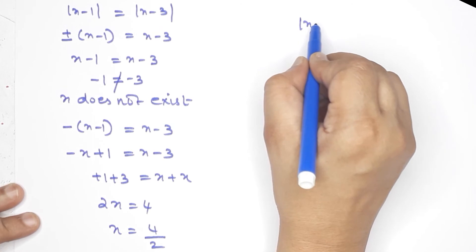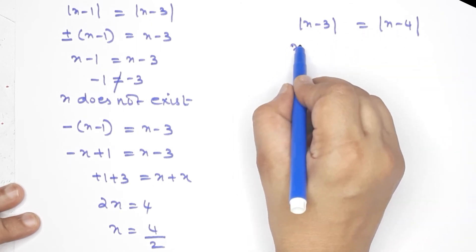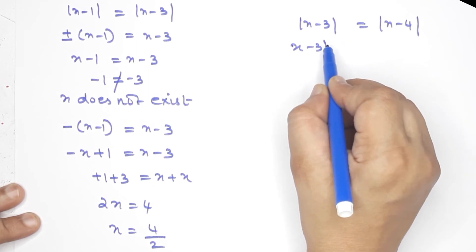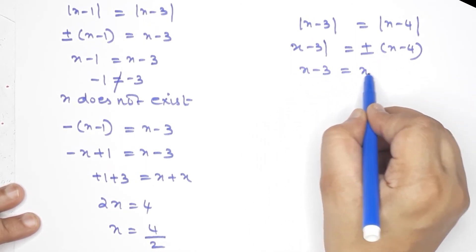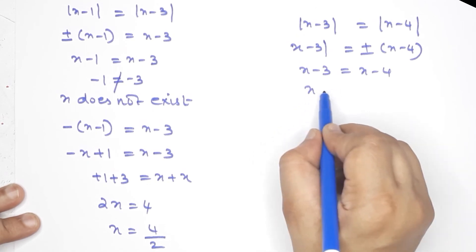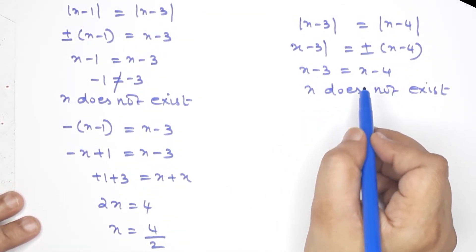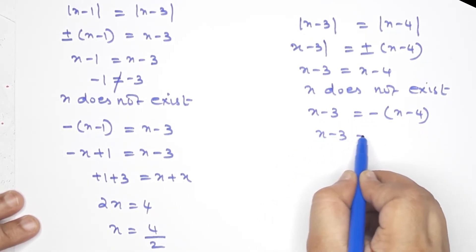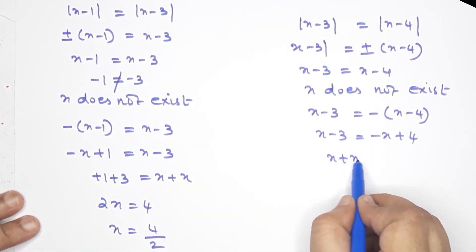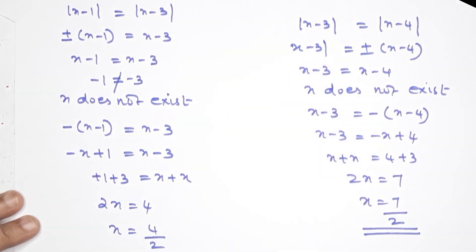Second part: modulus of x minus 3 equals x minus 4. Writing x minus 3 equals plus or minus of x minus 4. The plus condition: x minus 3 equals x minus 4, which gives negative 3 not equal to negative 4 — does not exist. The minus condition: x minus 3 equals minus x plus 4, so x plus x equals 4 plus 3, giving 2x equals 7, x equals 7 by 2.